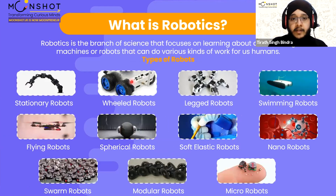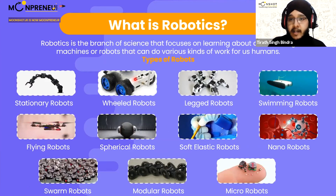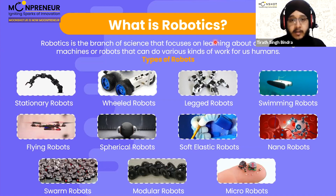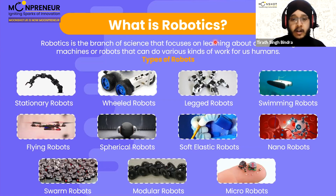Robotics is basically a branch of science that focuses on learning and creating machines or robots that can do various kinds of work for us humans. It is a branch of science that helps us to learn and program machines or robots that can do different kinds of work for humans.